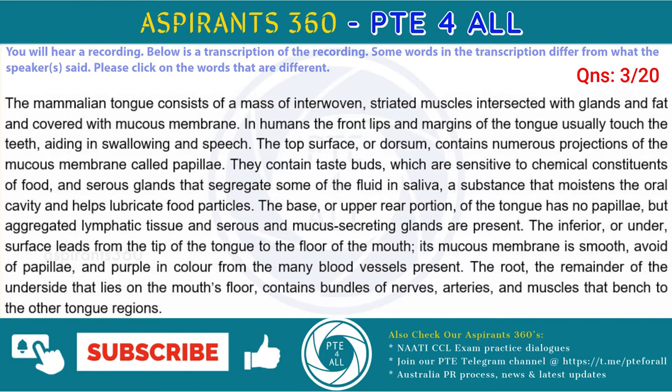The base, or upper rear portion, of the tongue has no papillae, but aggregated lymphatic tissue and serous and mucous secreting glands are present. The inferior, or under, surface leads from the tip of the tongue to the floor of the mouth; its mucous membrane is smooth, devoid of papillae, and purple in color from the many blood vessels present. The root, the remainder of the underside that lies on the mouth's floor, contains bundles of nerves, arteries, and muscles that branch to the other tongue regions.